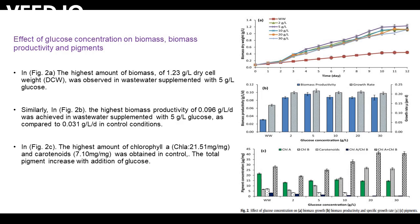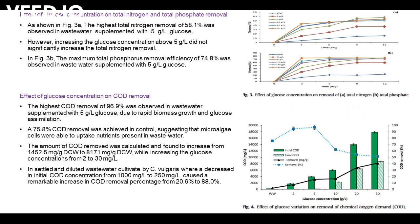The total pigment increased with the addition of glucose. In Figure 3, the effect of glucose concentration on total nitrogen and total phosphate removal is given. As shown in Figure 3a, the highest total nitrogen removal of 58.1% was observed in wastewater supplemented with 5 g/L glucose. However, increasing the glucose concentration above 5 g/L did not significantly increase the total nitrogen removal. In Figure 3b, the maximum total phosphorus removal efficiency of 74.8% was observed in wastewater supplemented with 5 g/L glucose.